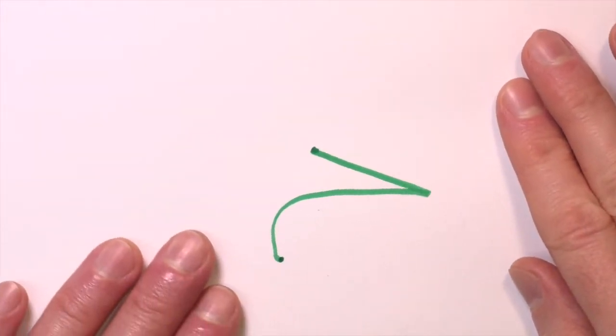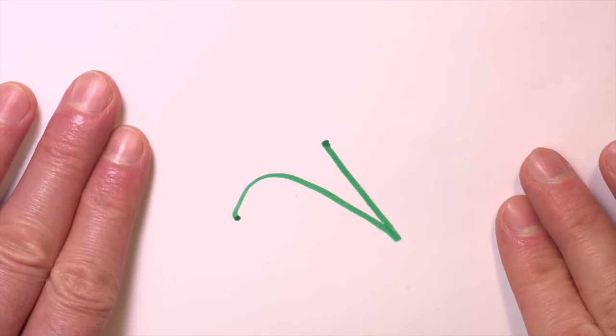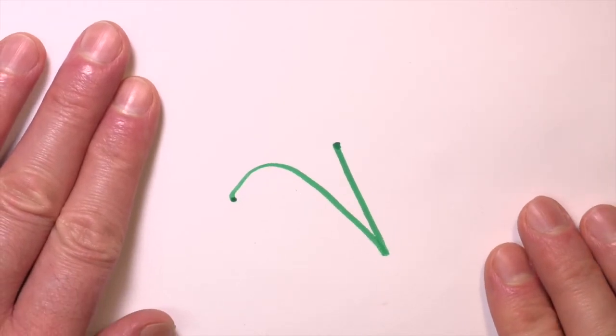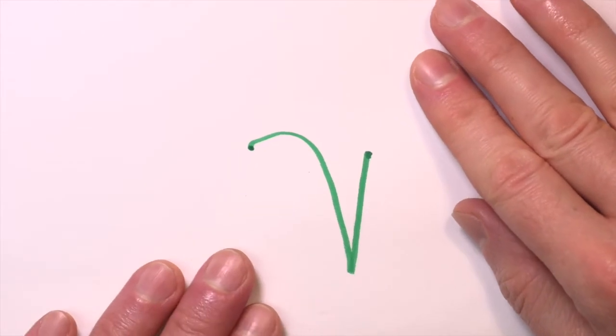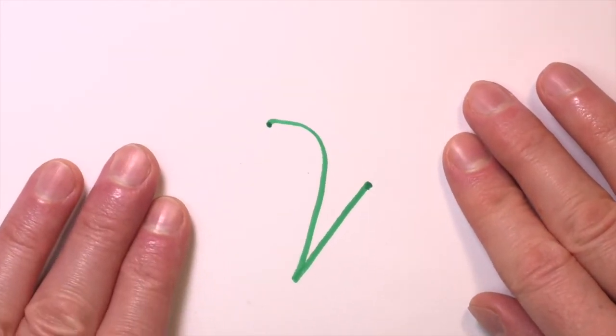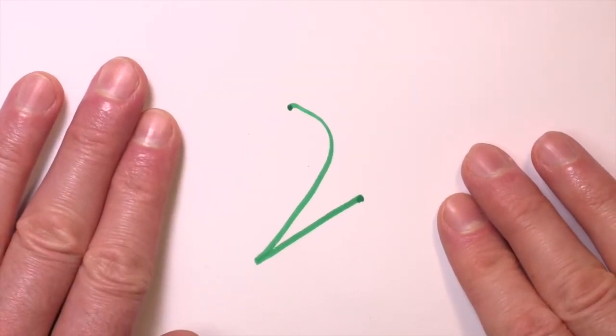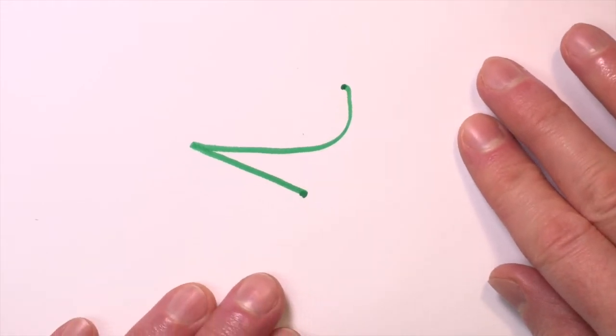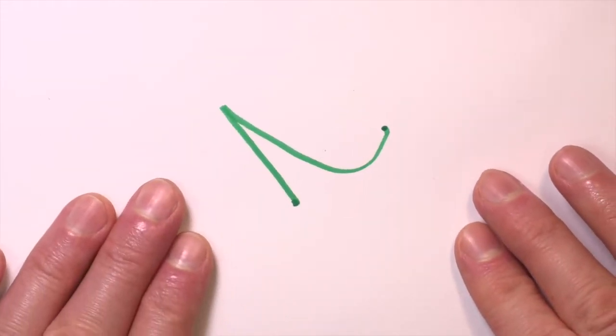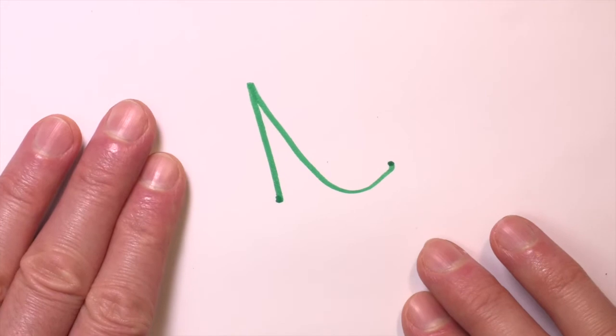It could be a bird's beak. It looks a little bit like a number two that someone didn't finish writing. Or an ice gate. Or it could be the open mouth of an animal.